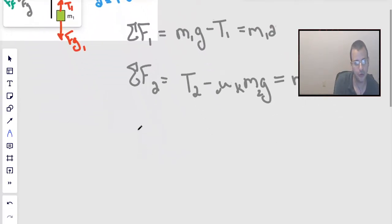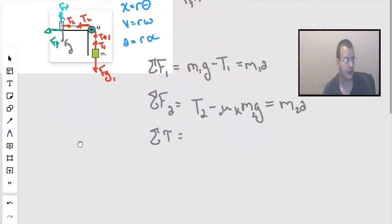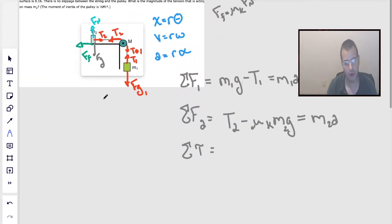Now we're going to go for all the torques on the pulley. Sum of all torques equals moment of inertia times alpha. Each individual torque is going to be RF. The R is from the center of the pulley to the outside, to the edge. The force in this case is going to be the tension.